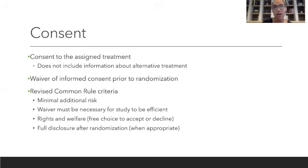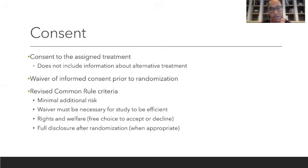Thirdly, the patient needs to have the right to accept or decline once they receive consent. The rights and welfare of the patient must be respected, and the patient has the choice of deciding if they want to continue participating in the study. As a fourth criteria, the patient needs to receive full disclosure after randomization or whenever it is appropriate — the patient needs to know that they are participating in a study and needs to know everything about their treatment.